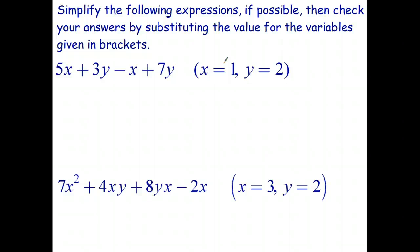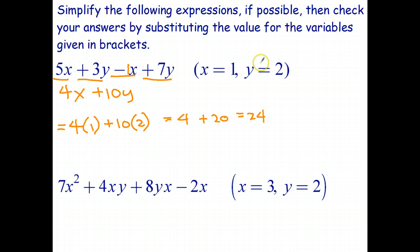Okay. Let's see how you went on these two questions. The first thing we have to do is simplify. So 5x take 1x is 4x. 3y plus 7y is 10y. So there's the simplified expression. Now we're going to substitute. So that's 4 times 1, because x equals 1, plus 10 times 2. 4 times 1 is 4. 10 times 2 is 20. So 4 plus 20 is 24. So the value of that expression, once we substitute, is 24. So we simplified and then evaluated.